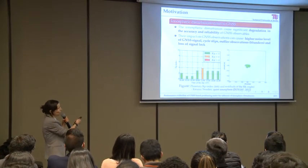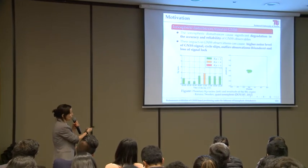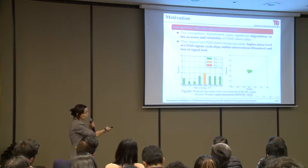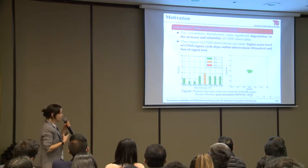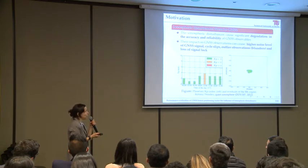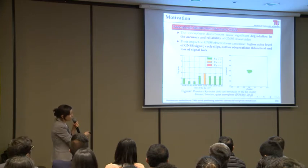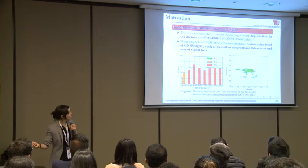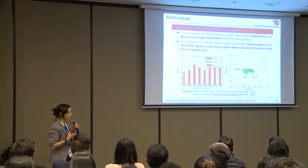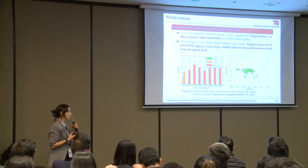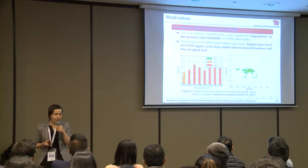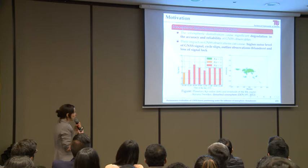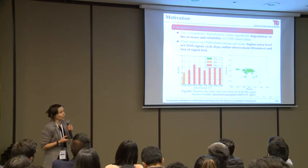When the systematic ionospheric bias is removed, accuracy is very good. The distribution of the daily solution shown here uses one-hertz data, so every second we obtain a solution for a stationary receiver — accuracy and precision are really good. But if we use the same positioning algorithm for a day when ionospheric disturbances occur, the positioning solution is much worse, with many outlier results having poor accuracy.